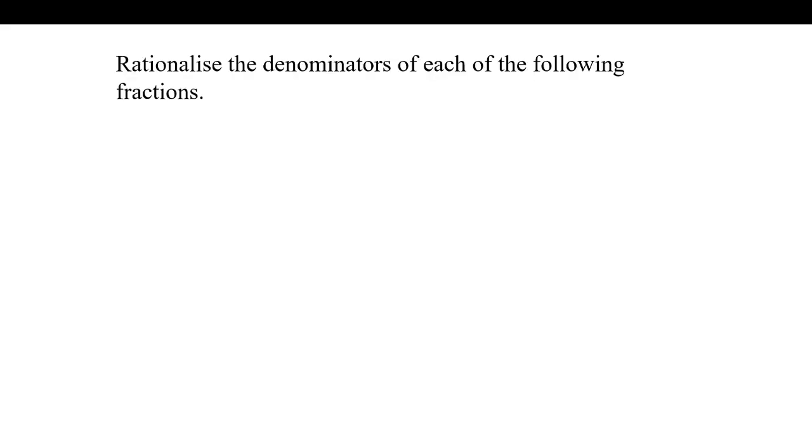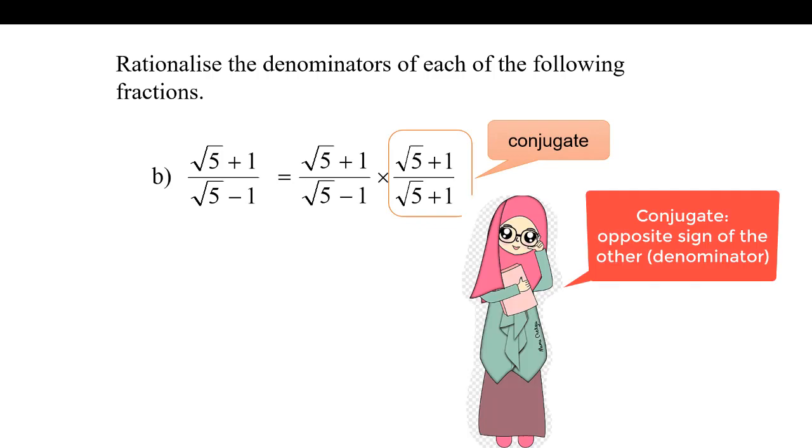Right now we're going to rationalize this example. We're going to multiply with the conjugate. See, if you look at the sign here, it's minus. So the other one will be the opposite sign, that is plus.